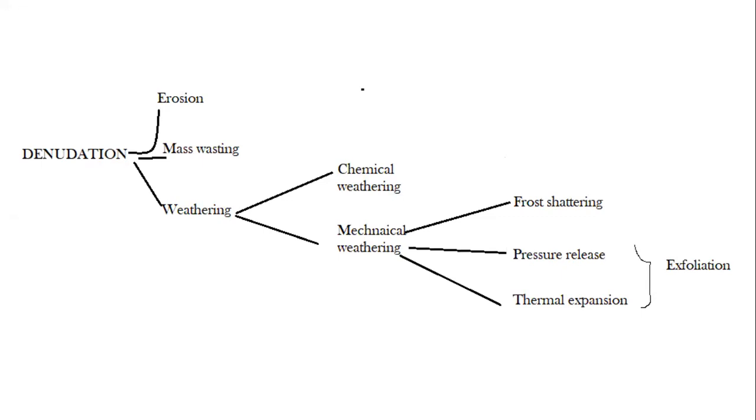Now denudation is the combined process of erosion, mass wasting, and weathering. All of these processes help to lower the land, help to cause the land to be worn down.